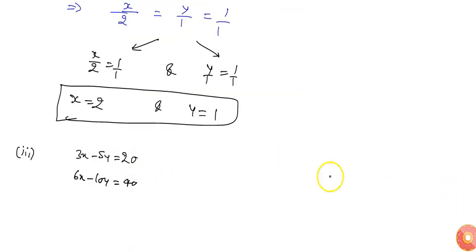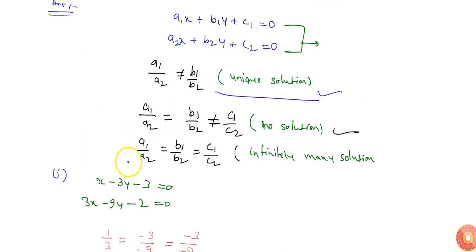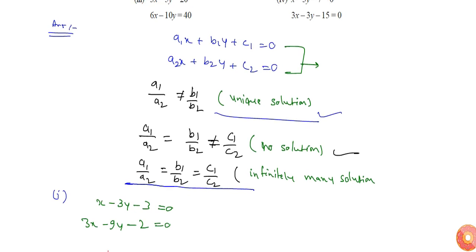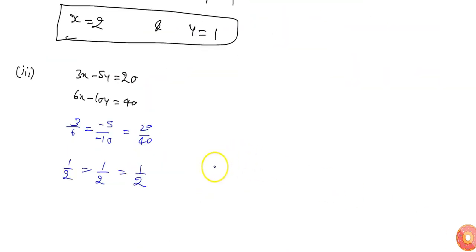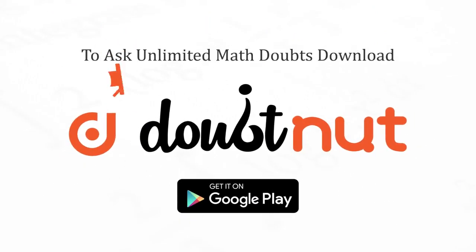Here in part 3, I can see that 3/6 equals -5/-10 equals 20/40, which equals 1/2 equals 1/2 equals 1/2. So this is the third condition when the ratio of coefficients of equations are equal, then the equation has infinitely many solutions. So the pair has infinitely many solutions.